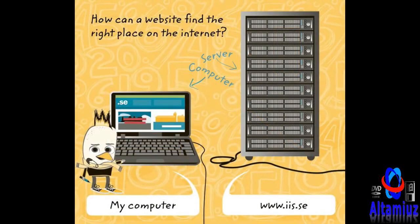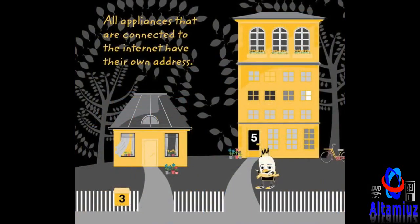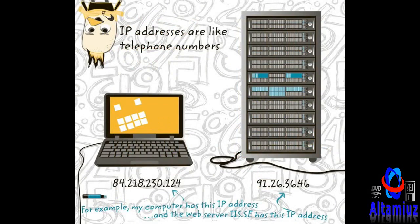How can a website find the right place on the internet and arrive on my computer? That's because all appliances that are connected to the internet, like computers, mobiles, and servers, have their own address. It's like the house you live in — it also has its own address so that you can receive mail and people can visit you. You can also say that internet addresses are like telephone numbers. The right number in the right order makes the computers and mobiles able to find each other on the internet. It's like calling a telephone number and having someone answer.